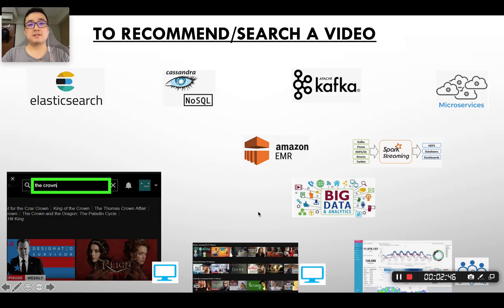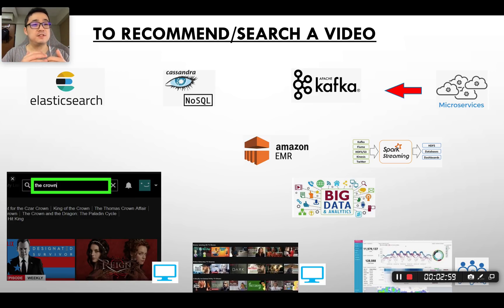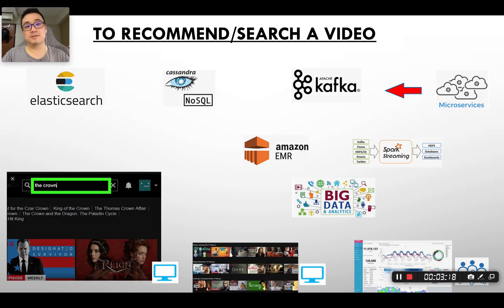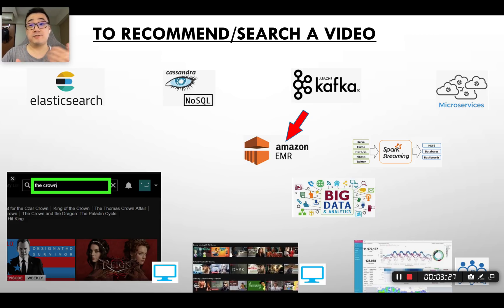The second use case is how we're going to recommend video to the user, and how the user performs a search for a video on demand. Imagine we have microservices running on the Netflix back-end. The video-playing microservice is going to send log messages containing the user browsing history to a message bus or message broker called Kafka, which makes message delivery in an asynchronous format. We're going to leverage MapReduce for processing data stored on HDFS — usually this will be offline data for batch jobs.